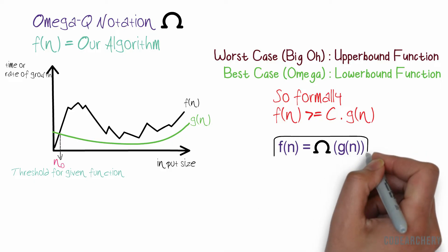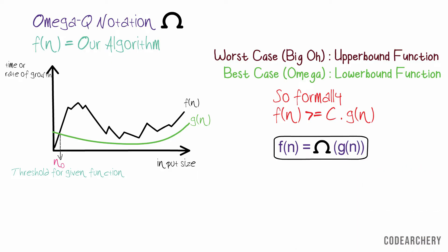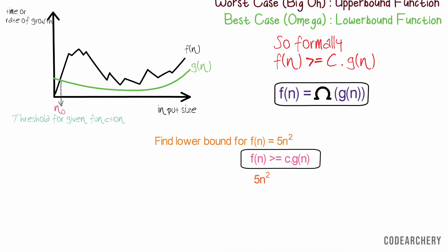So for worst case, we use Big O and for best case, we use Omega. Let's find the lower bound for 5n². We'll stick to our definition that is f(n) is greater than c times g(n). Since our f(n) is quadratic, we will take g(n) as a quadratic function that is n². So now if you observe a bit, for c equals 5 and n equals 1, this equation holds true. Now we can say that for function 5n², its best case time complexity is Omega of n². That is 5n² equals Omega of n². Don't worry about the math part. Just focus on the notations here.